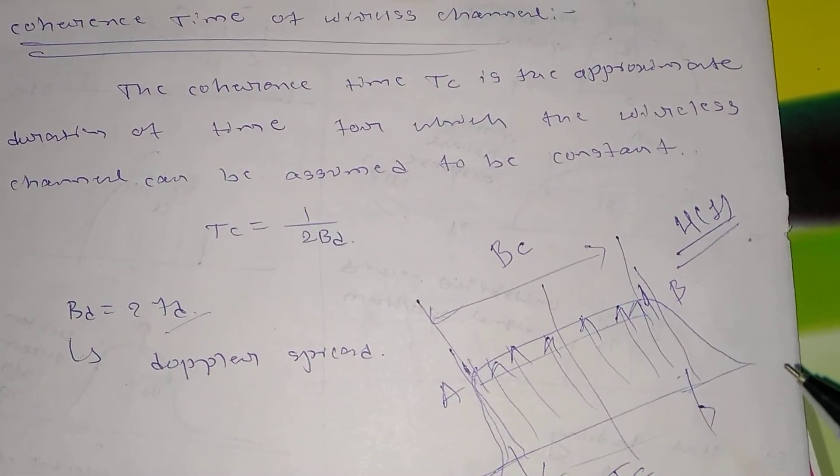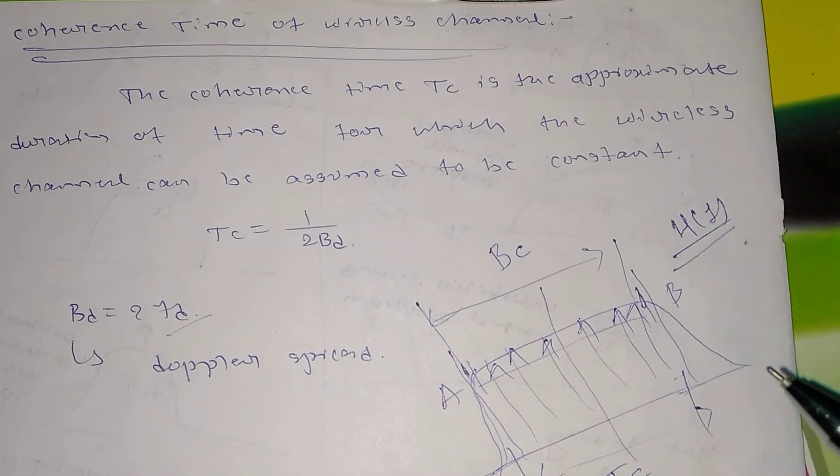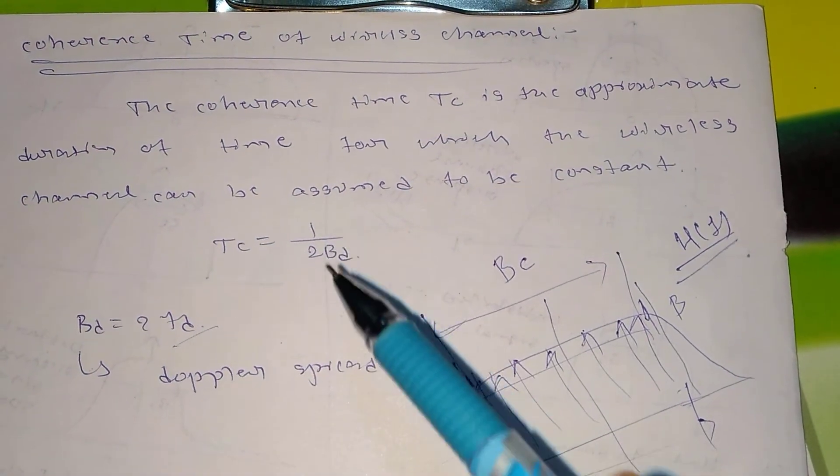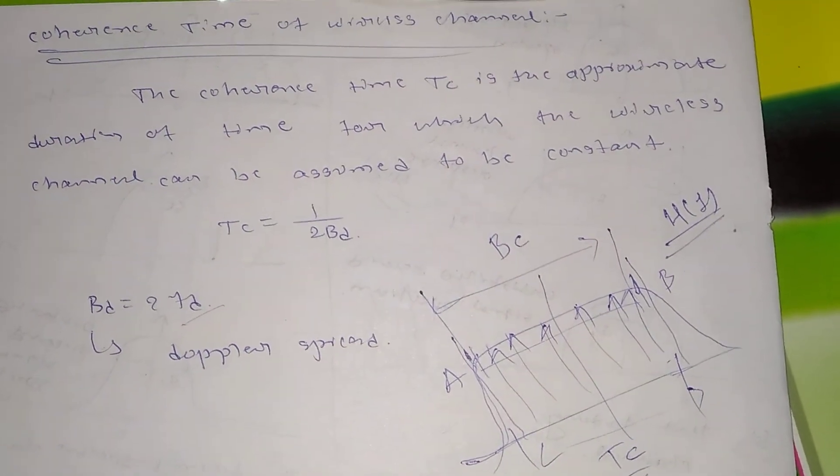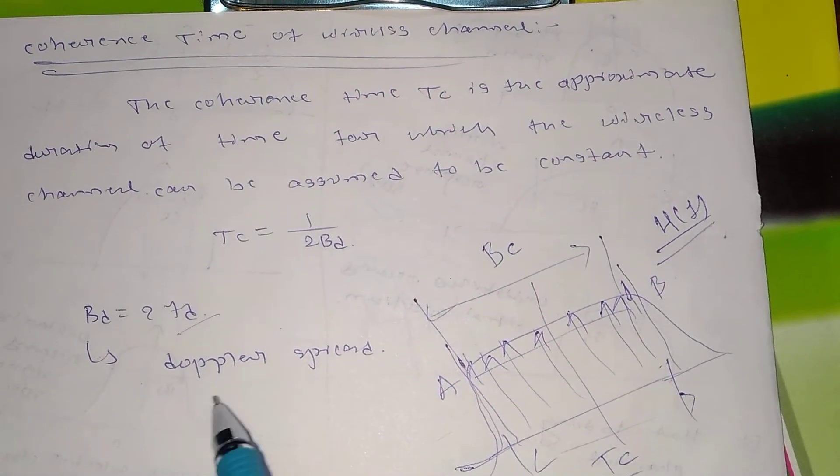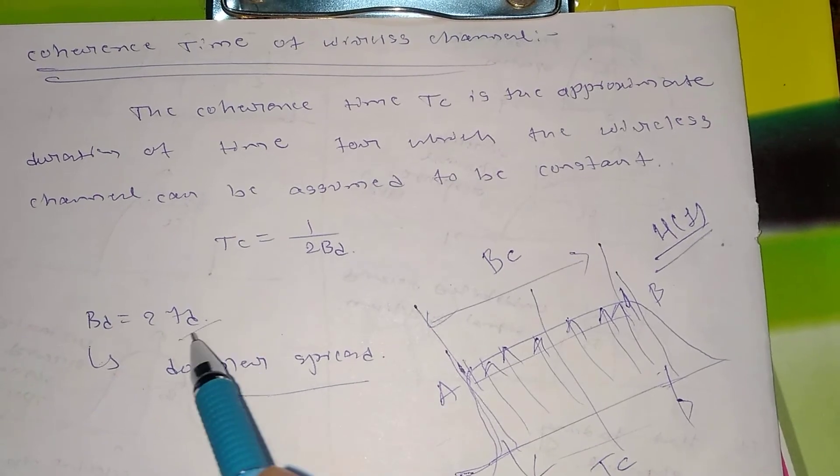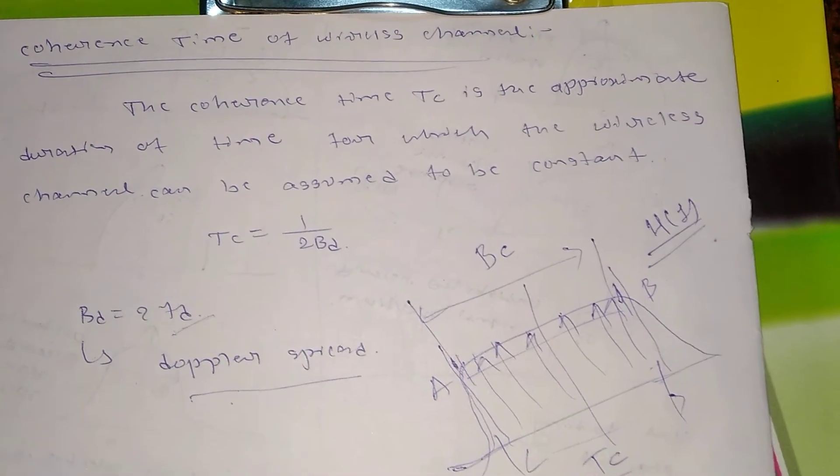That will be giving me the coherence time of that particular channel, and it is denoted by 1 by 2BD. So BD is obviously 2FD, so BD stands for Doppler spread.